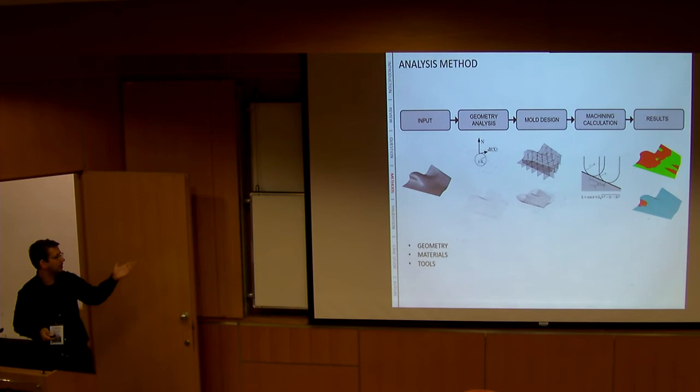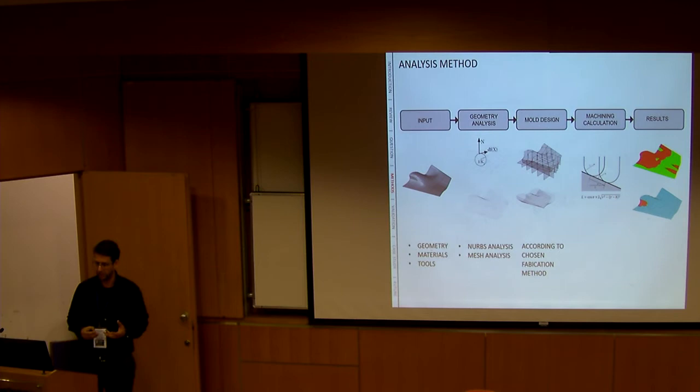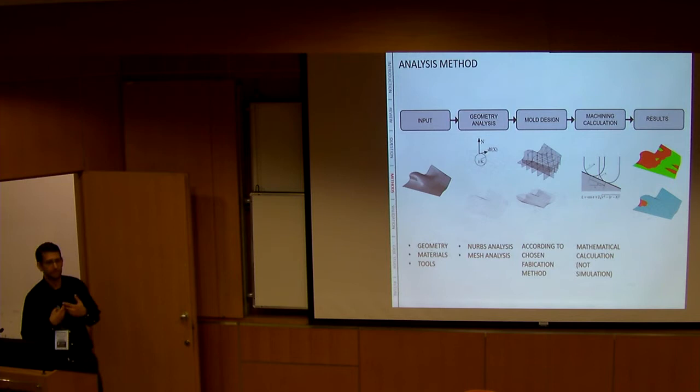Let's say I want a given geometry. So I give my algorithm the geometry, the materials it wants to use, the tools it has available. It analyzes it, both using NURBS and mesh analysis. It actually designs the mold. So you need to have everything that's around the mold in order to make a geometry.